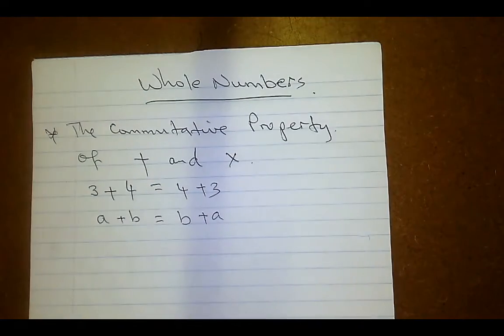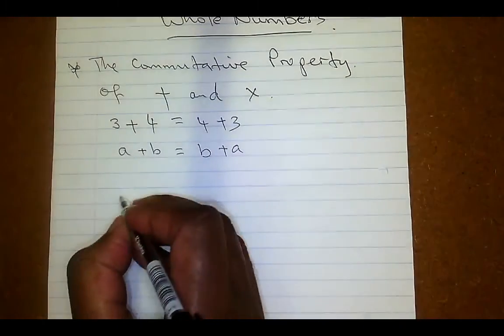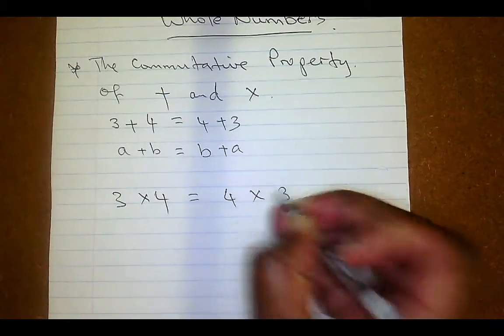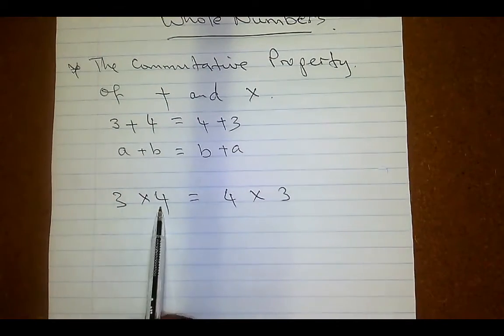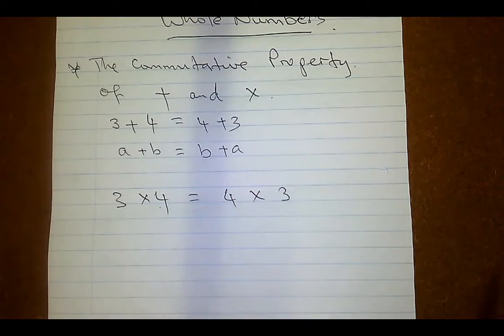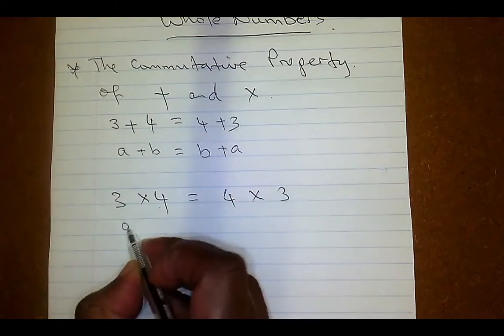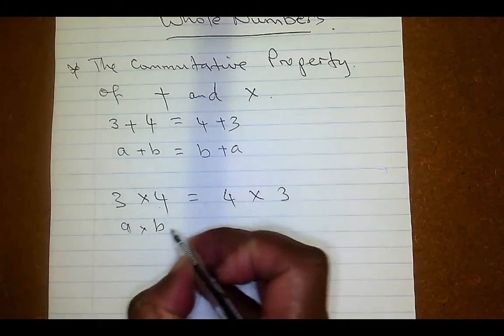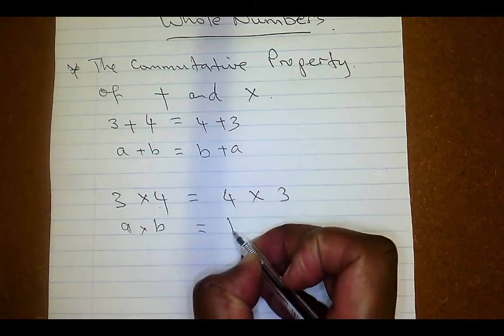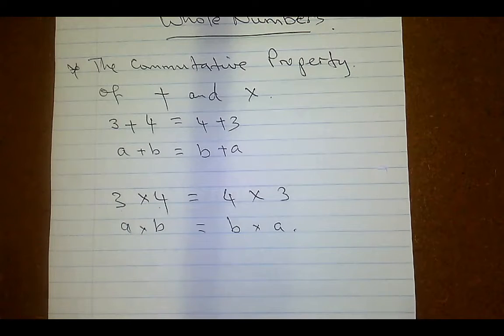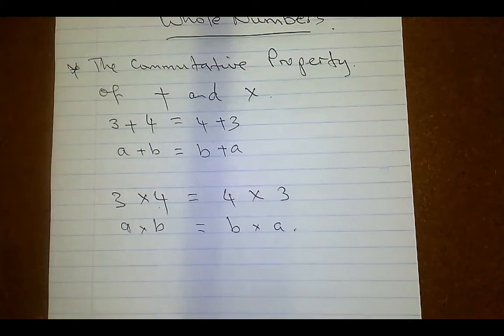That is also true for multiplication. For instance, three multiplied by four can be written as four multiplied by three. When I write three times four and you write four times three, we mean exactly the same thing. In terms of multiplication, a times b is the same thing as b times a.